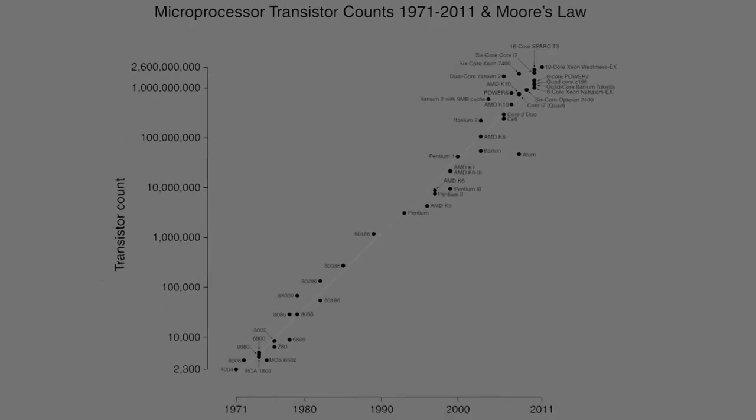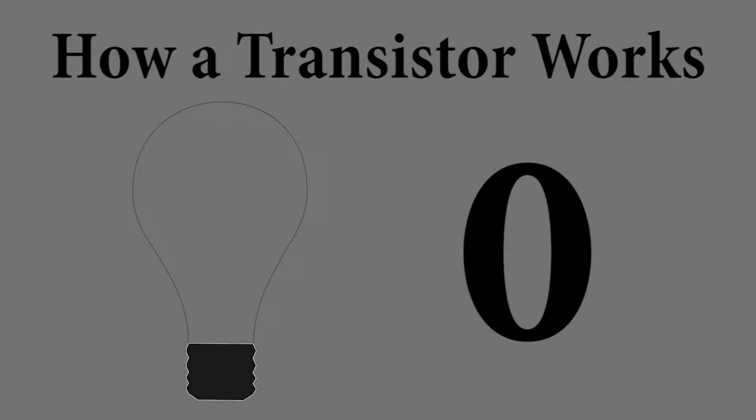But actually, the end of Moore's Law is coming, in as little as six years. To understand why this may happen, let's learn how transistors work.